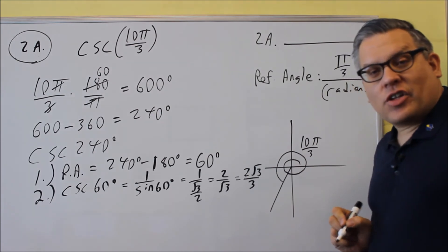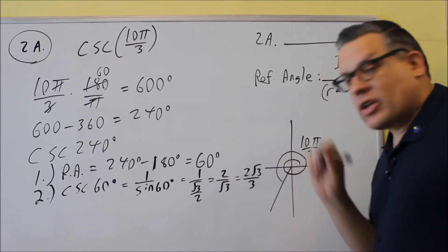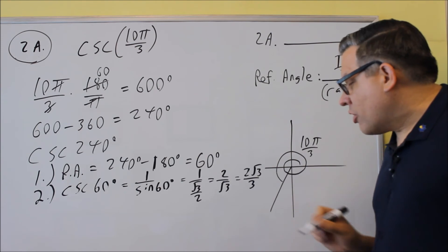Okay, so either one of these is fine. If it doesn't say they're rationalized, then actually if you just wrote this, I would accept that as well. But 2 square root of 3 over 3.